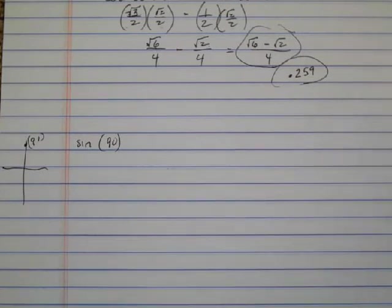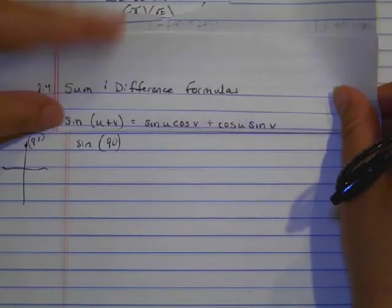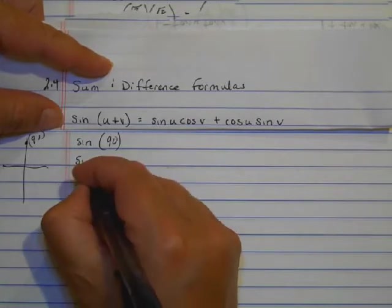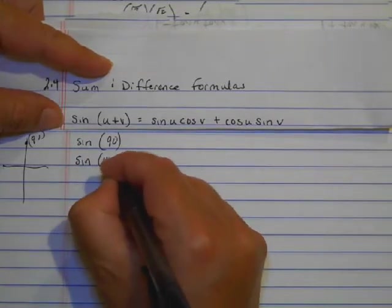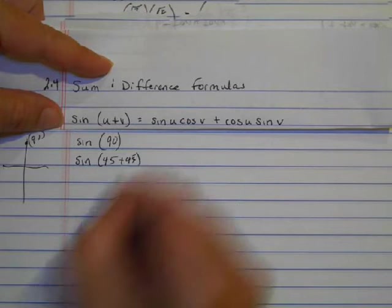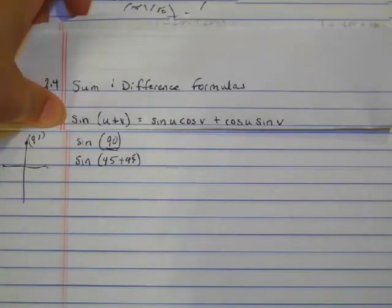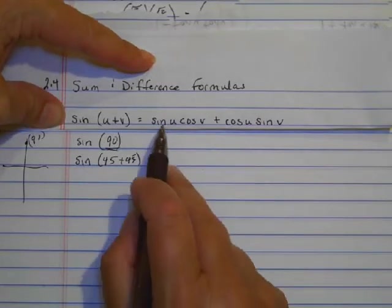So I'm going to use the sine sum formula. So I'm going to change sine of 90 into sine of 45 plus 45. I can change any number into two numbers that are on the unit circle.